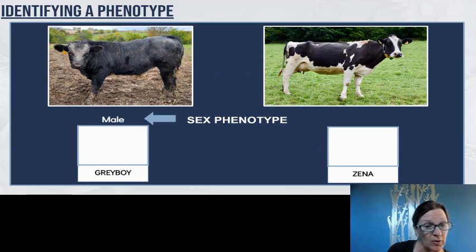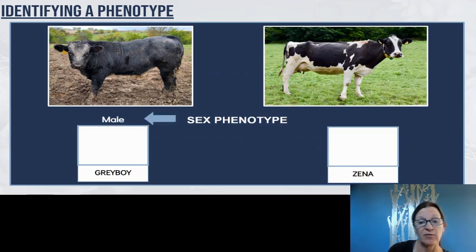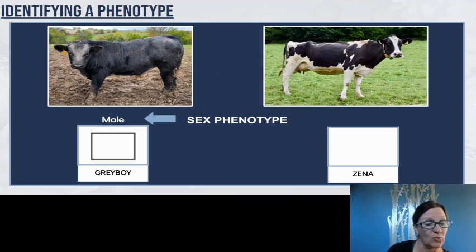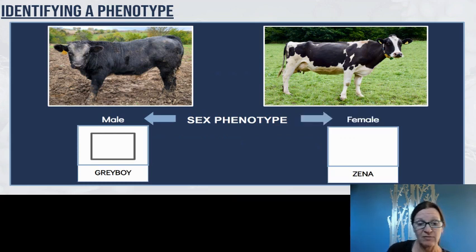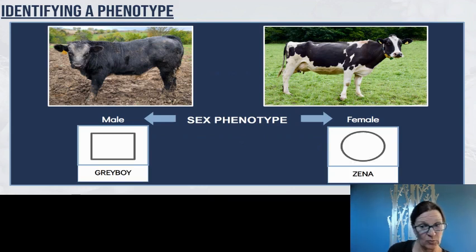Gray Boy has the male phenotype for sex, and we're going to represent that with a square. Xena has the female phenotype for sex, and we're going to represent that with a circle.